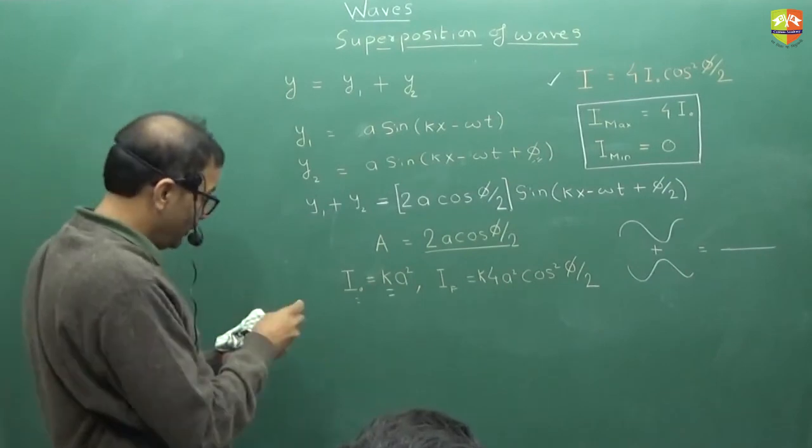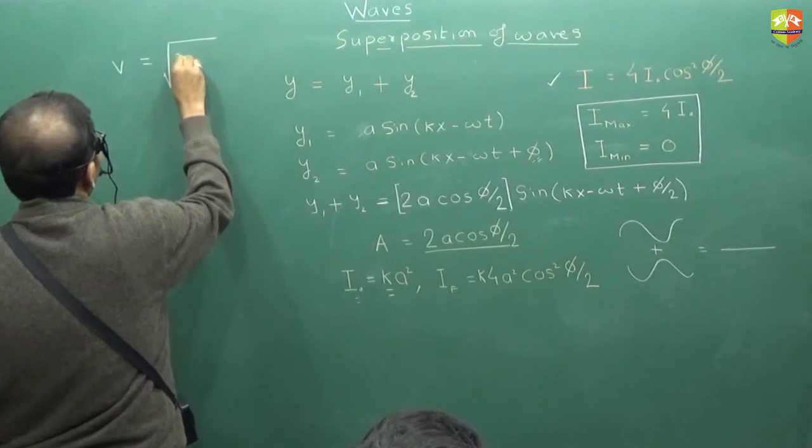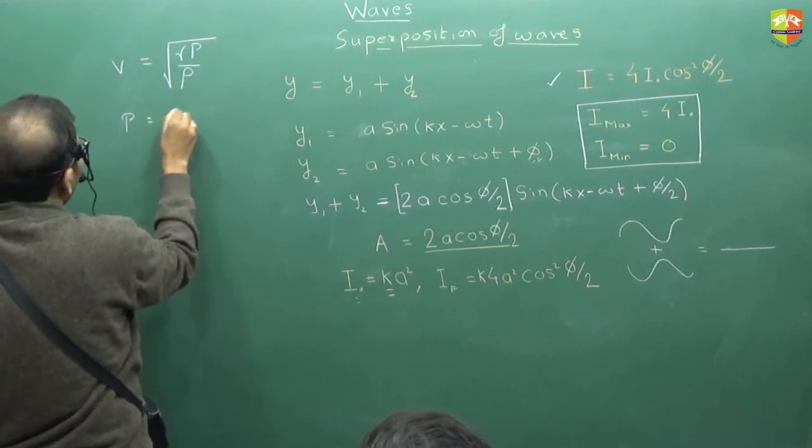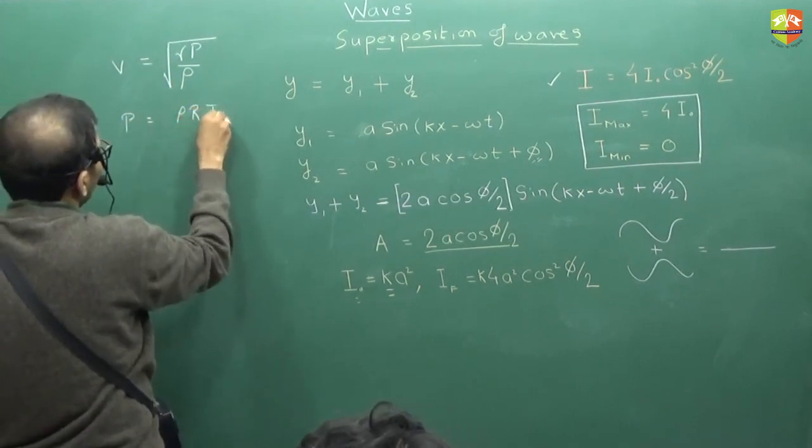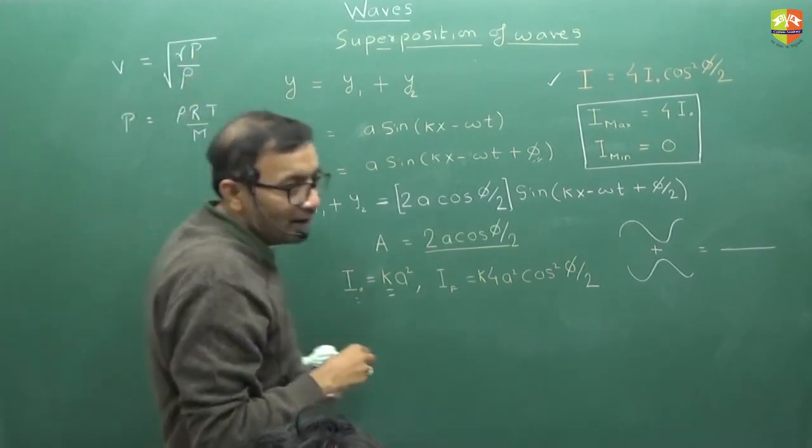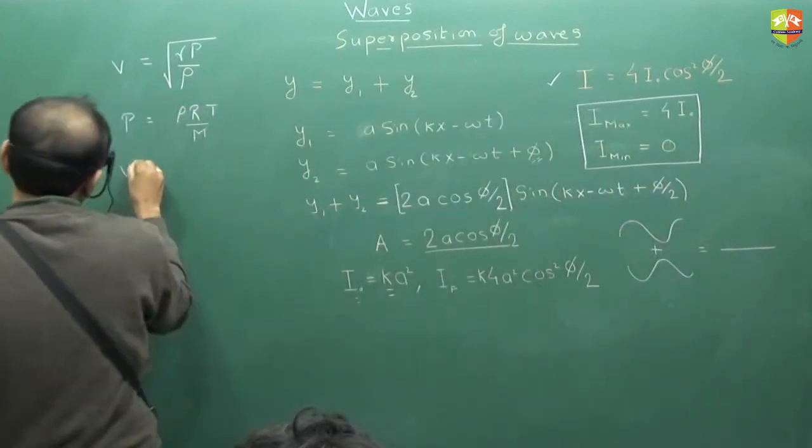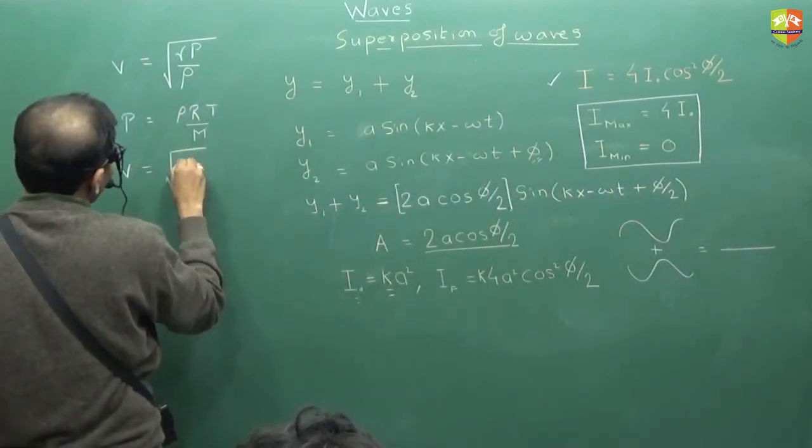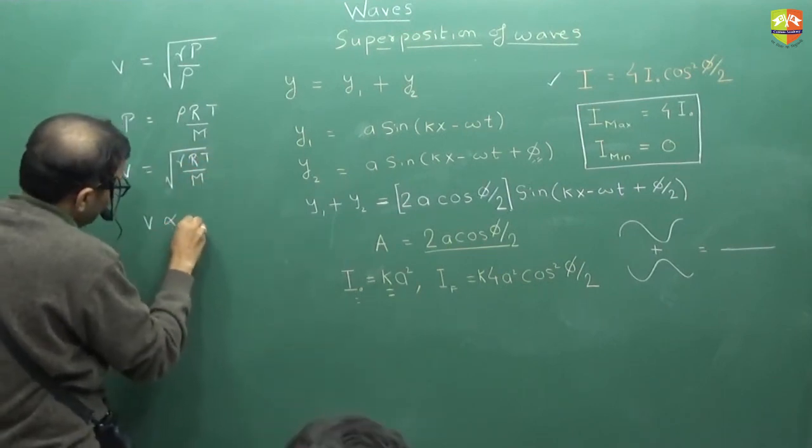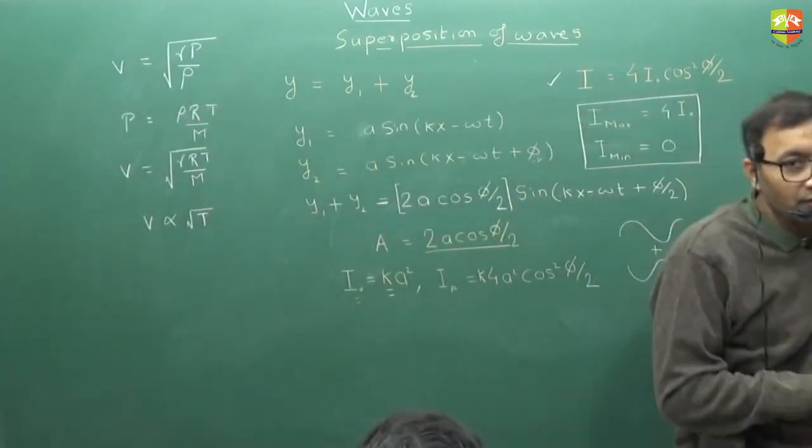By the way, since he has pointed out that velocity we have found out for the sound is √(γP/ρ), right? And P is equal to ρRT/M. So P/ρ is RT/M. So √(γRT/M) is also the speed of sound. So velocity can be written as root of γRT/M. And hence, velocity is proportional to root over temperature of the air.